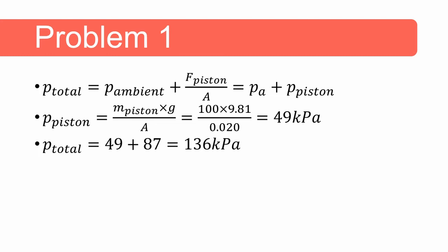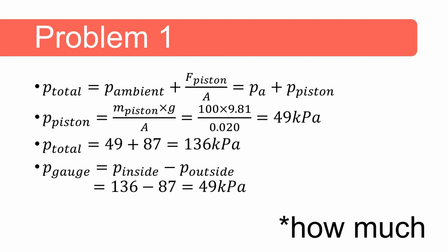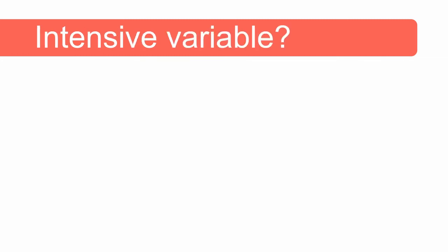And now we can add them together so the total pressure inside the cylinder is 136 kilopascal. To get the gauge pressure we are going to subtract the outside pressure from the inside pressure and in this case it's 136 minus 87, 87 being the atmospheric pressure, and we get a gauge pressure of 49 kilopascal. Now note this will be the same irrespective of how much air is inside the cylinder. So if you let out some air and measure the gauge pressure again you will get the same value of 49 kilopascal. And this nicely illustrates why pressure is an intensive variable.